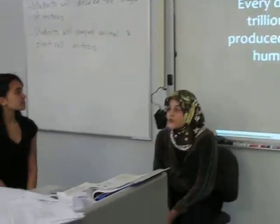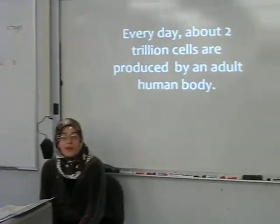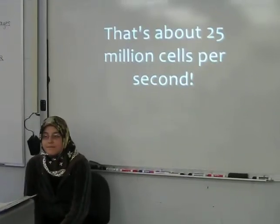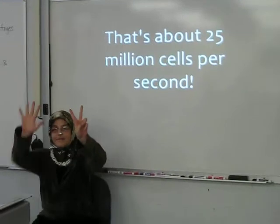Every day, about 2 trillion cells are produced by an adult human body. That's about 25 million cells per second.